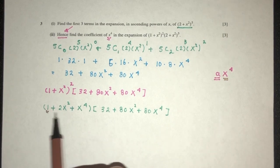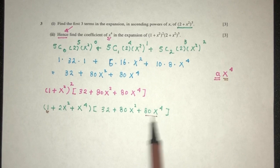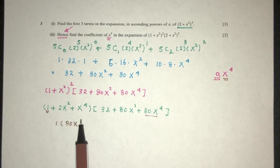For example, here I have 1. Obviously, 1 will have to multiply by this one. You will have 1 times 80 x power 4.